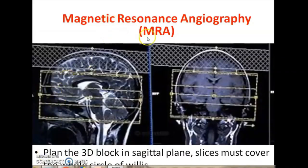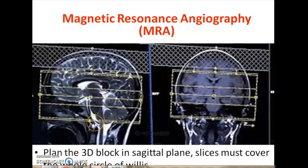This is how you plan for the MRA. MRA is normally a 3D TOF sequence used in most institutions. It's a 3D sequence, almost three blocks. Some overlap will be in each block, and it should cover the entire Circle of Willis area and should be planned in the sagittal section, then followed by adjusting in the coronal section also.